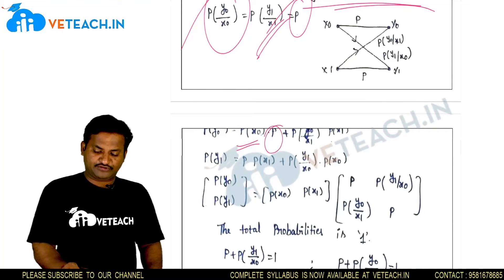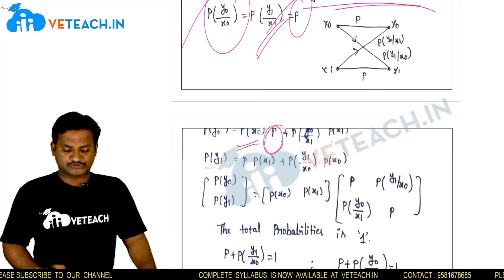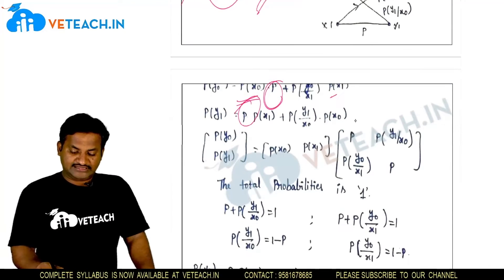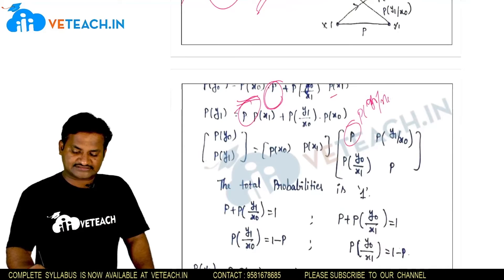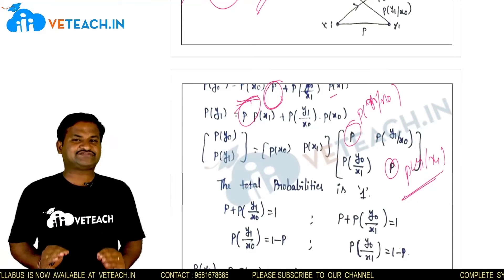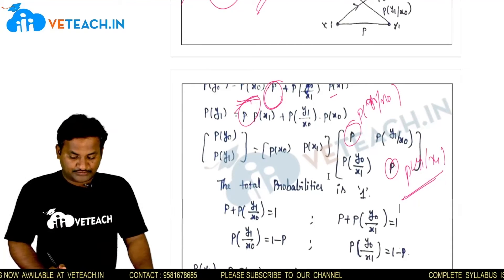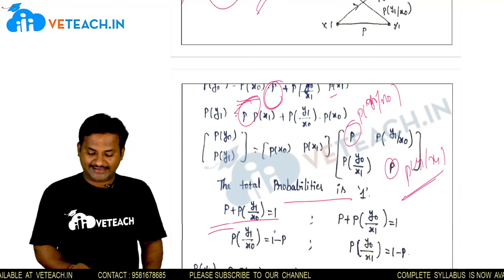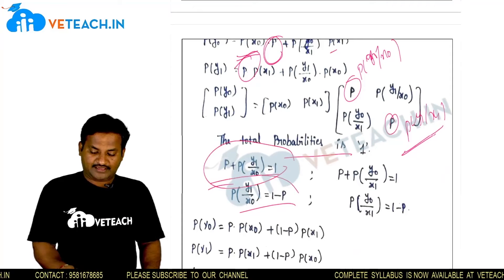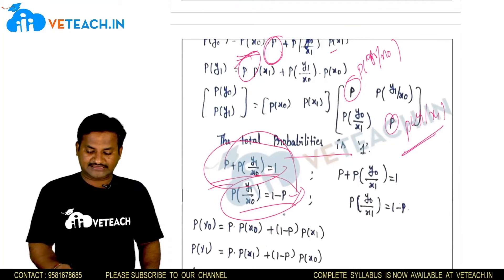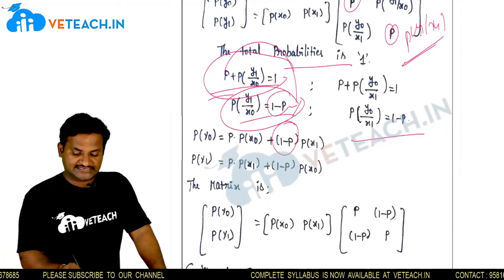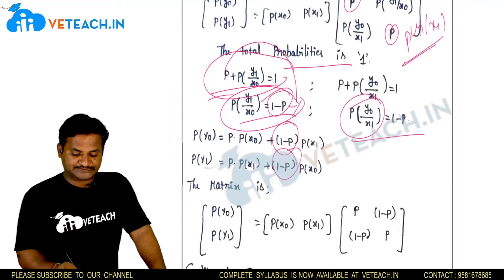In the binary symmetric channel, p(y0|x0) and p(y1|x1) are both replaced with p. Since all probabilities must sum to one, p(y0|x0) + p(y1|x0) = 1, so p(y1|x0) = 1 − p. Similarly, p(y0|x1) = 1 − p.